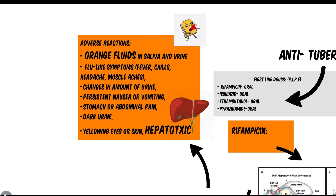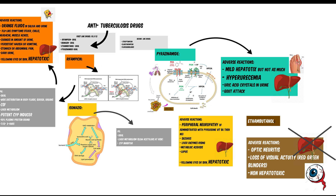The next drug is isoniazid. Isoniazid has oral administration and undergoes liver metabolism, but beware — slow acetylators are at risk. If a patient is genetically predisposed to having low acetylation in their liver, do not prescribe them isoniazid. It's also a potent CYP inhibitor, unlike rifampicin which is a potent CYP inducer.